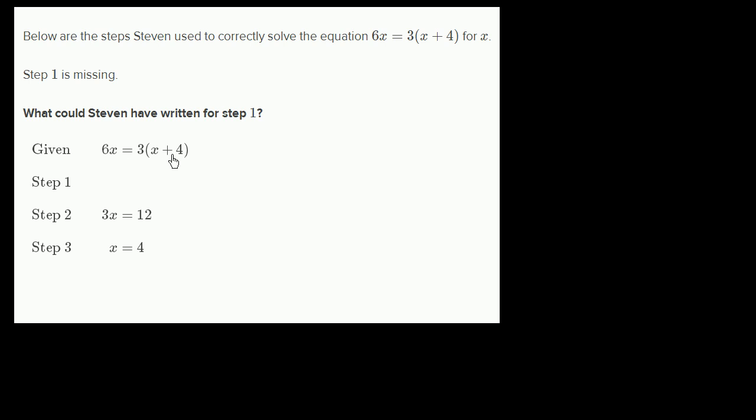So let's see. This is the original equation. They give us a blank for step 1, and then we see that he eventually gets to 3x equals 12. Then he divides both sides by 3 and he gets to x equals 4.